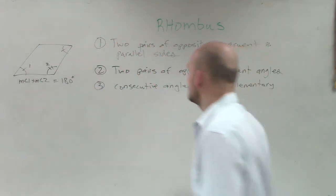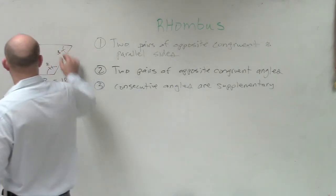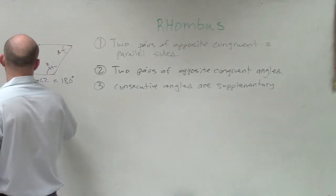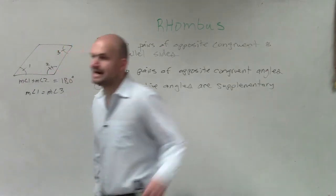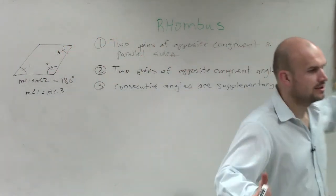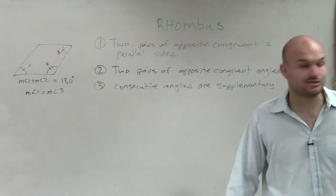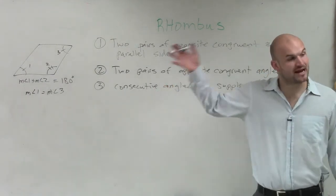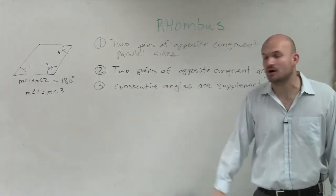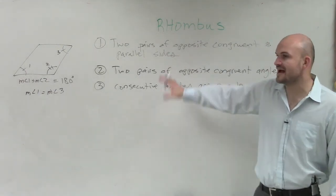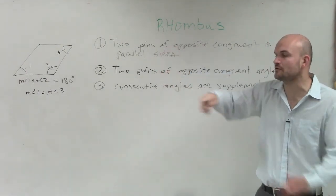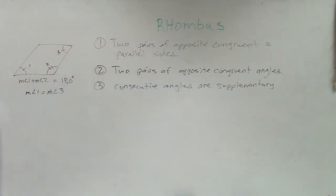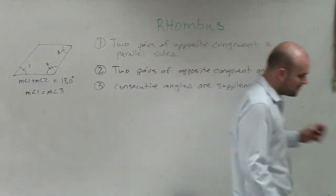And this one, if that's three, then we could say measure of angle one is equal to measure of angle three. Opposite angles are congruent, consecutive angles are supplementary. That's true for all parallelograms. And since a rhombus is in the family of parallelograms, it's true for that as well. This is nothing new. This is everything I have wrote this exact same thing for parallelograms, and I've wrote this exact same thing for rectangles.